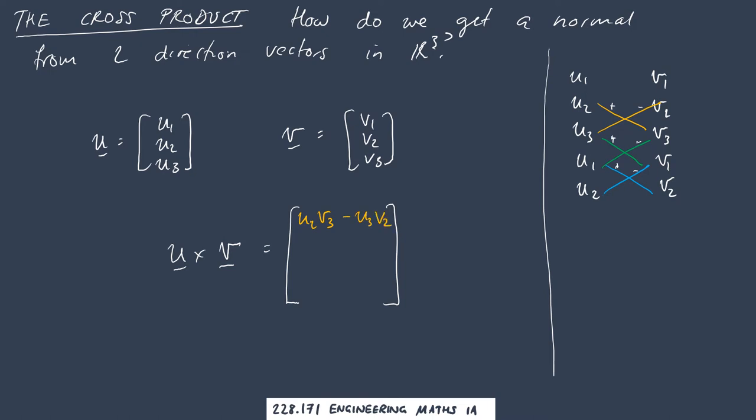It's negative for the ones going back again. If I look at the green shoelace, I've got u3v1 minus u1v3. And then if we look at the blue, I have u1v2 minus u2v1.